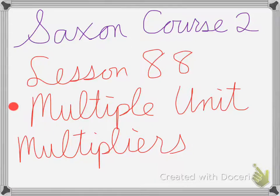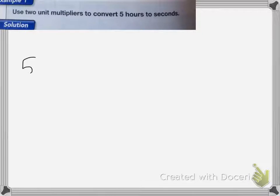Saxon Course 2, Lesson 88 is on multiple unit multipliers. I'm going to use two unit multipliers to convert five hours into seconds. First, I have to take that five hours and I need to convert it into minutes.